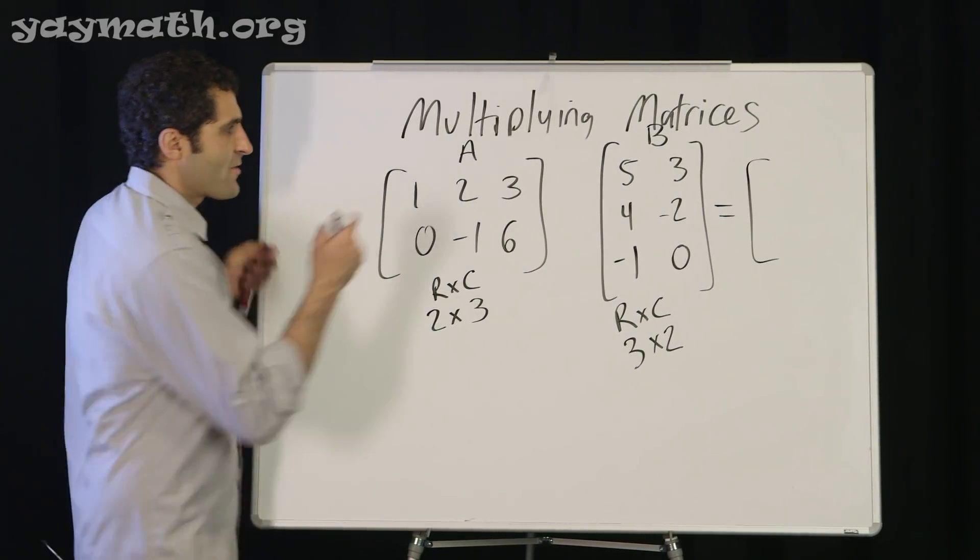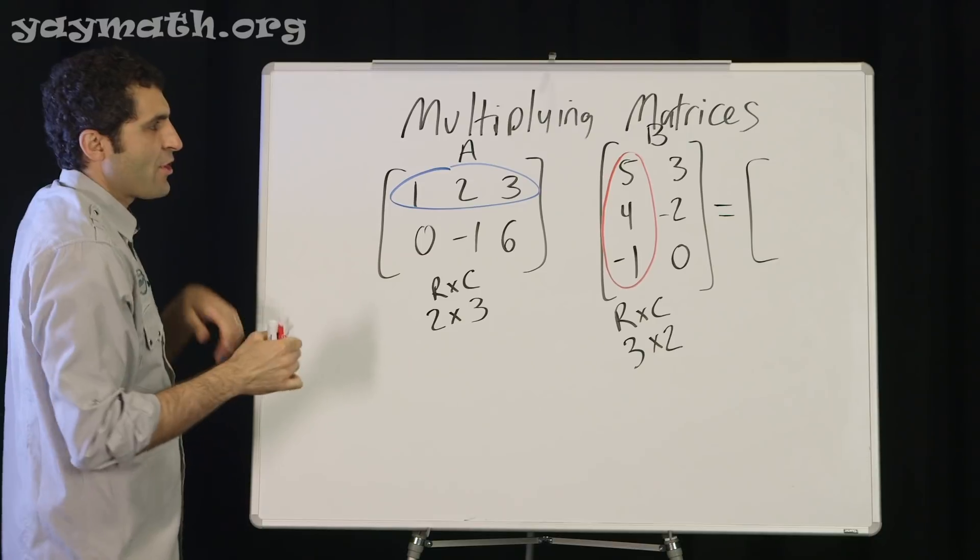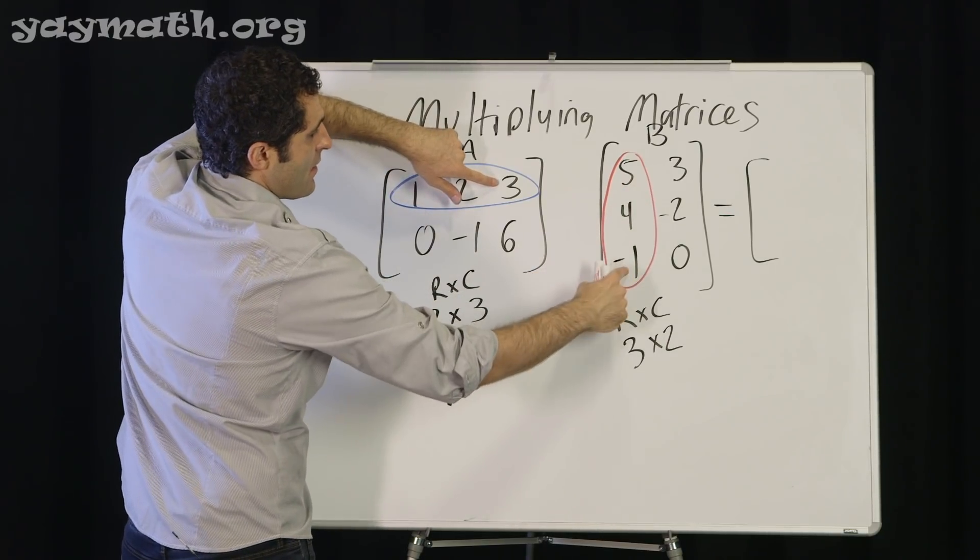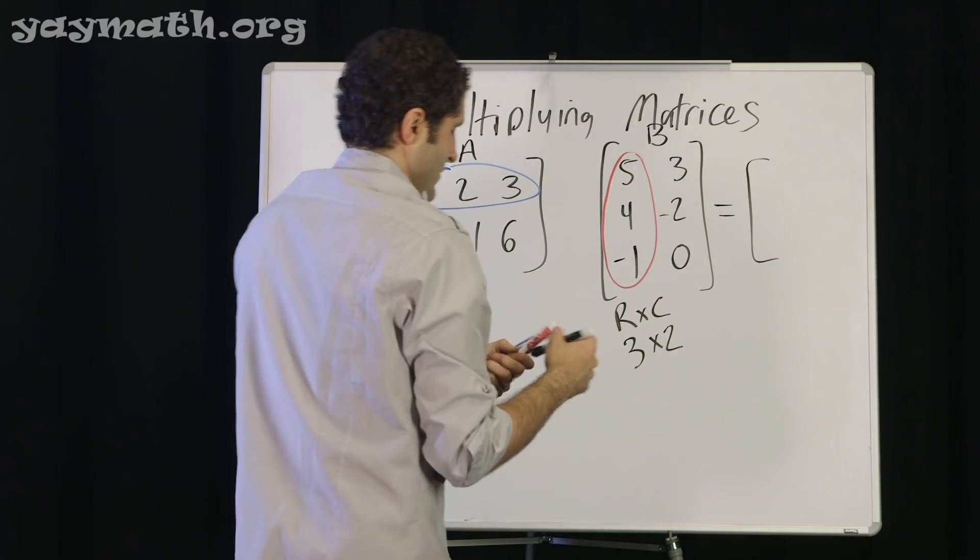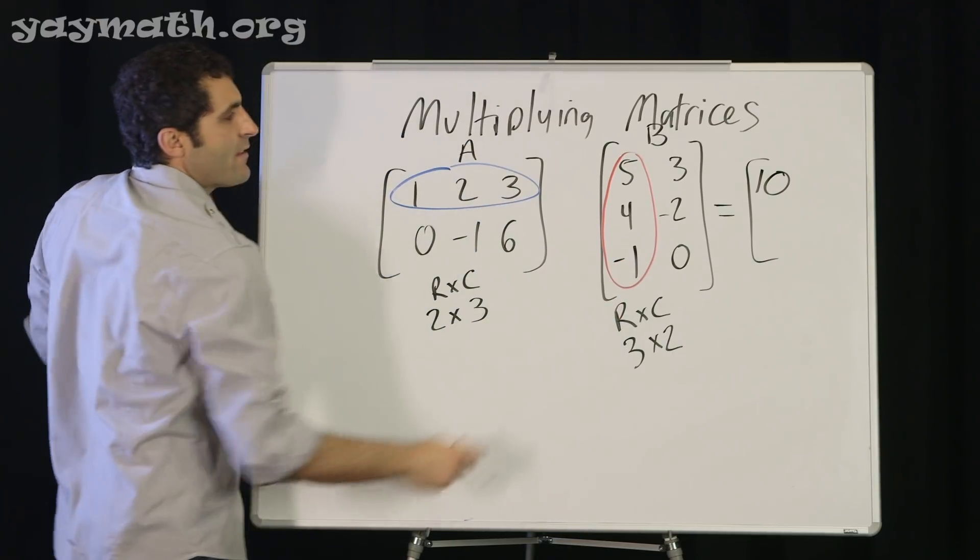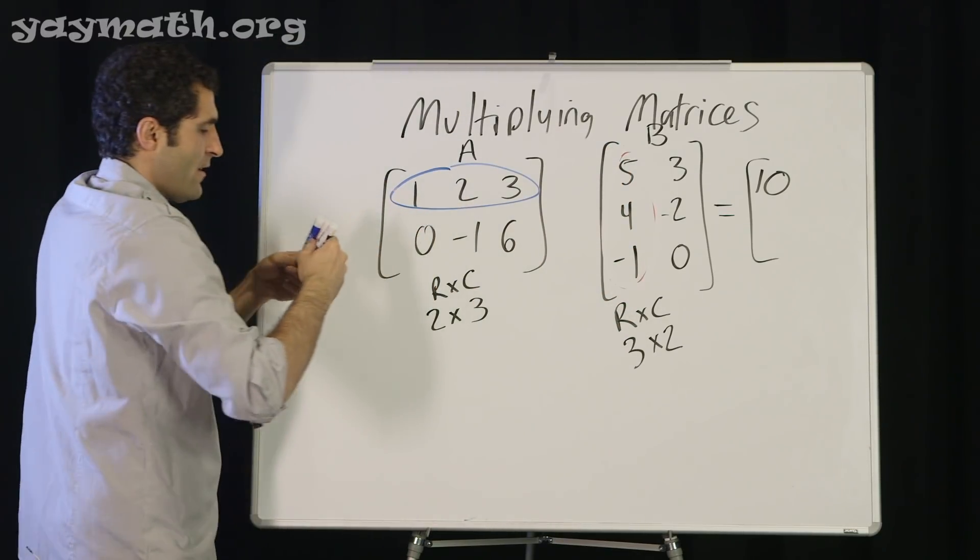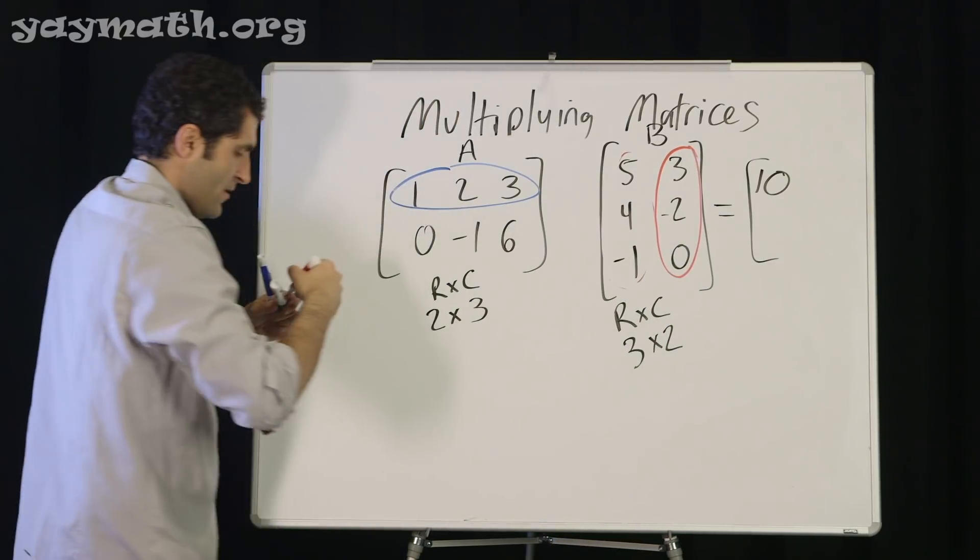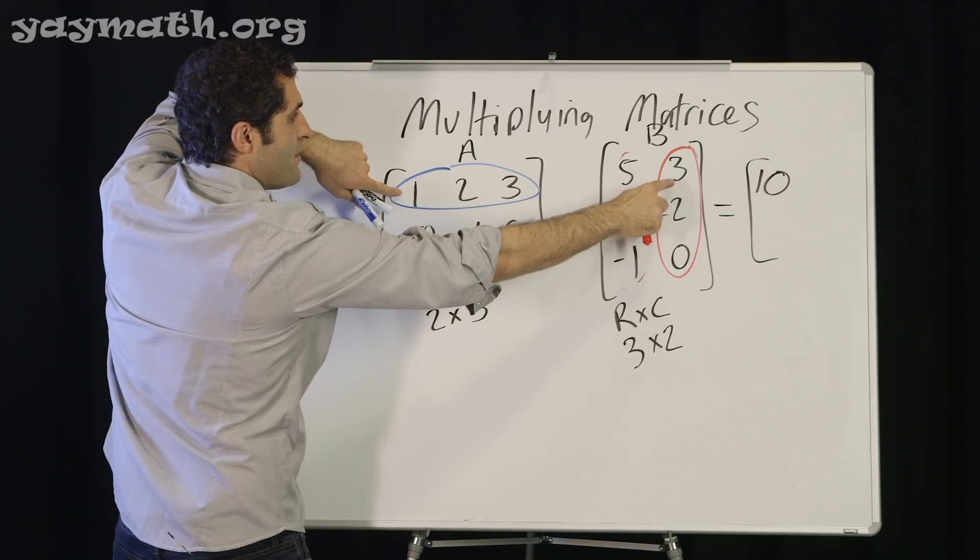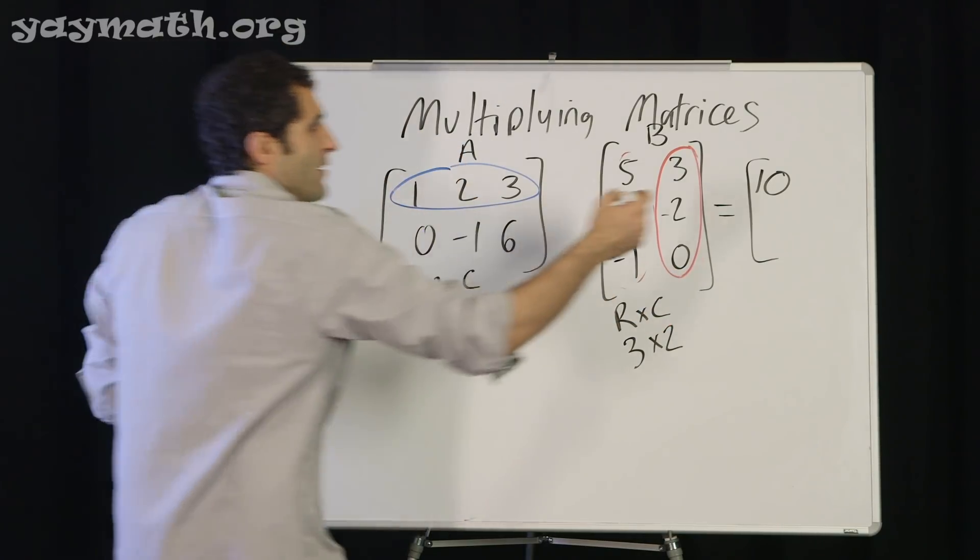A times B. Rows by columns. We got to get our arithmetic game tight. This is 1 times 5 is 5, plus 8 is 13, plus negative 3 is 10. We can't move to the next row until we've exhausted every column. Focus on this column here. 3 plus negative 4 is negative 1, plus 0 is negative 1.